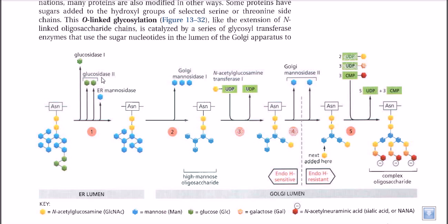As soon as the protein is produced inside the ER lumen it is further modified — we call it post-translational modification. During post-translational modification, these sugar moieties are added to the protein backbone. After that, in the ER lumen, glucosidase enzymes are present. Those glucosidase enzymes cleave off the glucose residues from the polysaccharide chain, and after cleaving those glucose residues we end up with no glucose present in the oligosaccharide backbone.